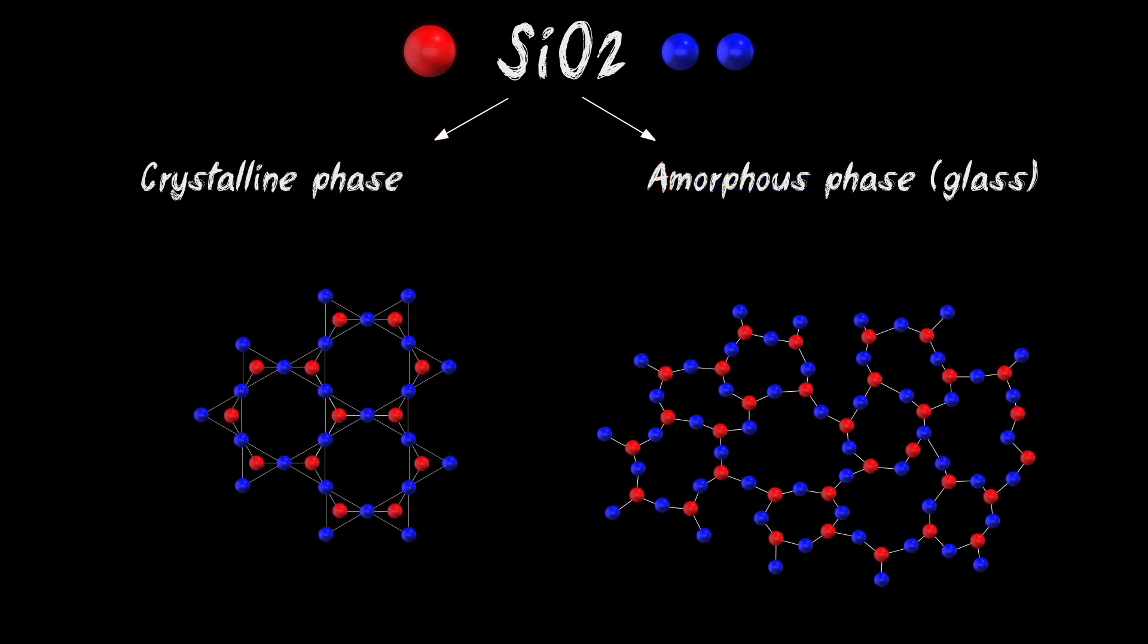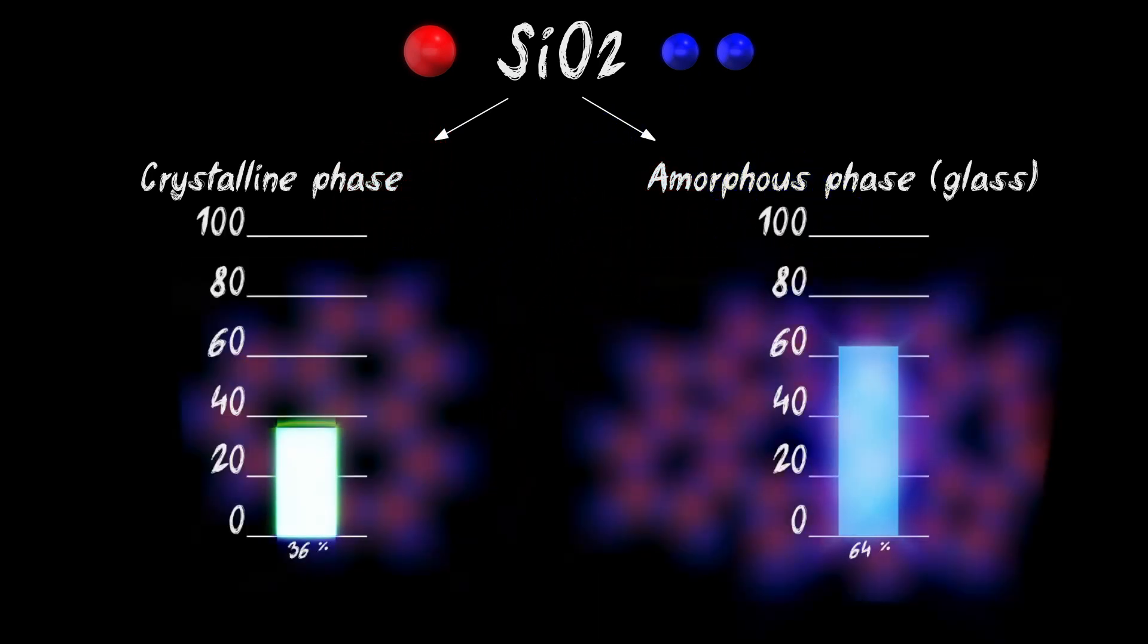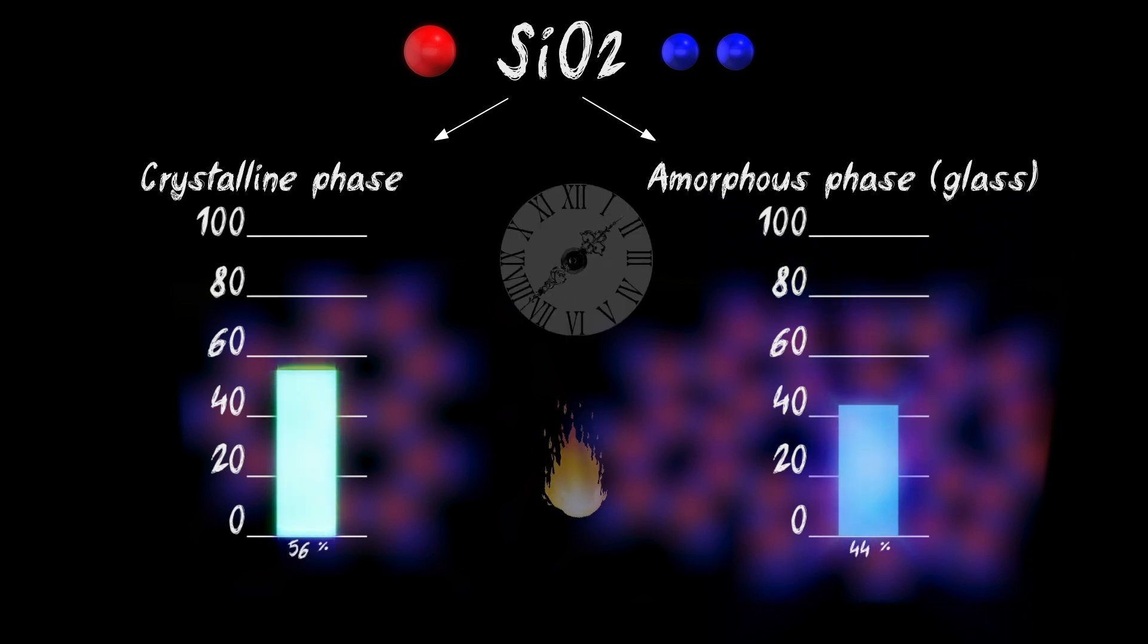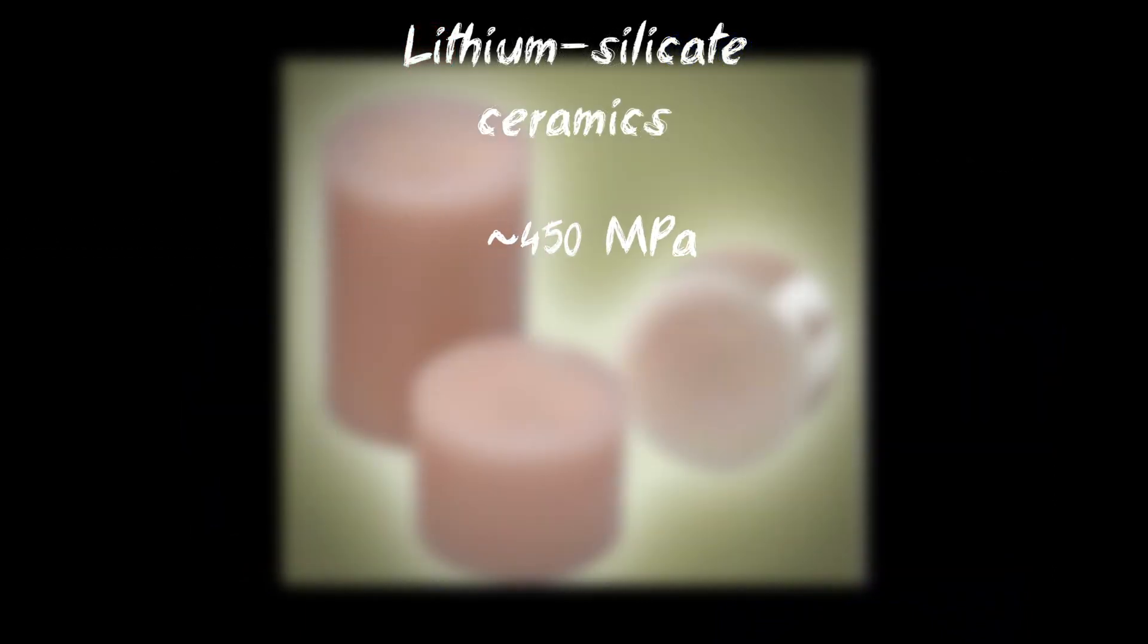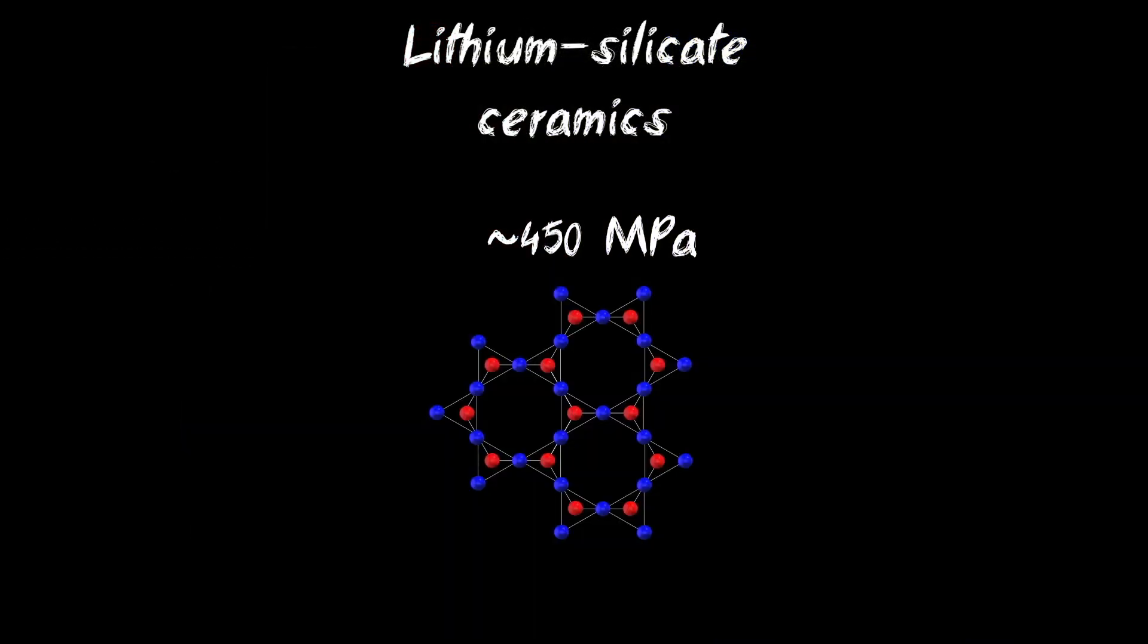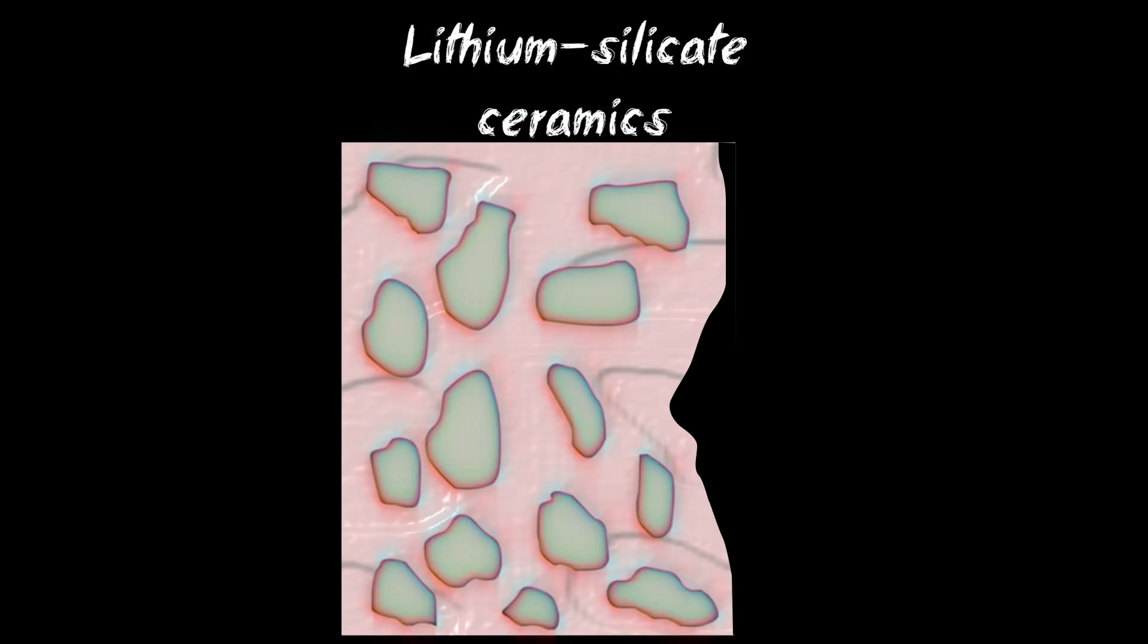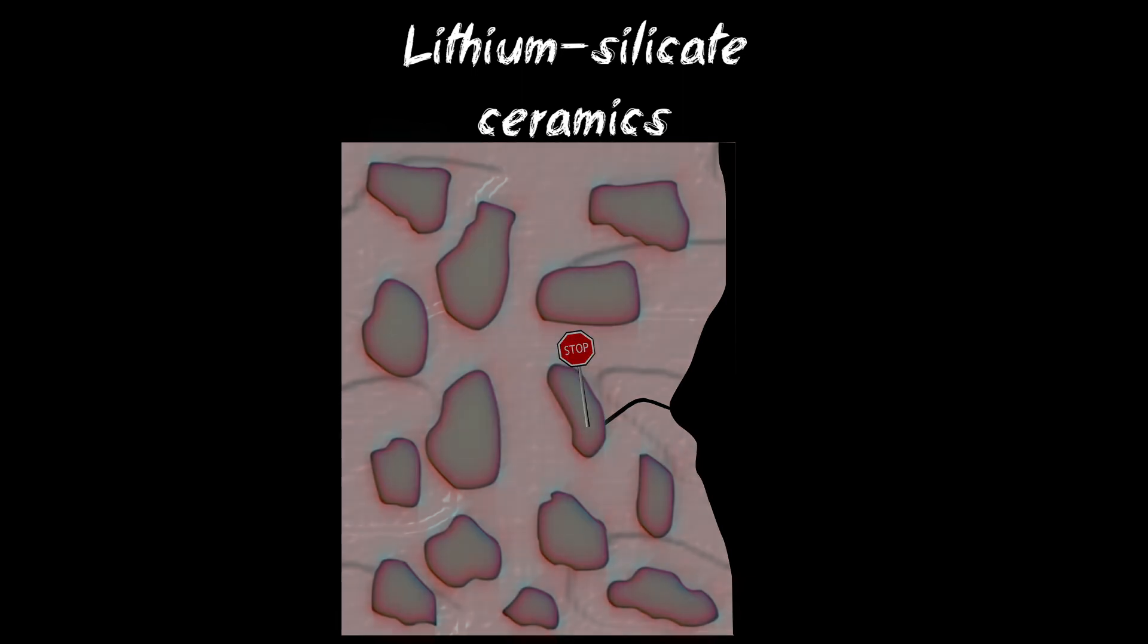The proportion of the glass phase and the crystalline phase depends on the temperature and the firing time during manufacture of ceramic in the plant. The strength of lithium silicate ceramic is about 450 MPa is due to the fact that it contains more crystals and crystalline phase. So when cracks appear, the crystals act as a barrier to further propagation. That is why it has so strength.